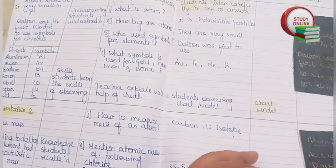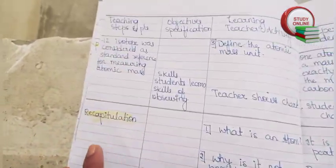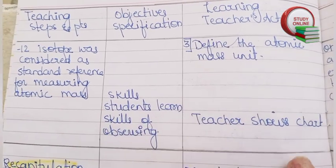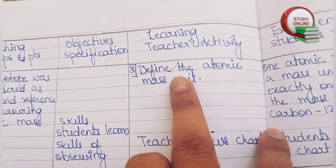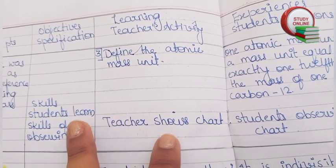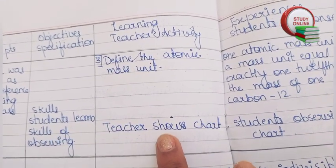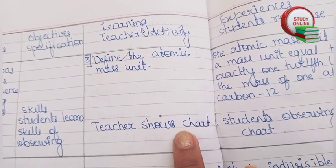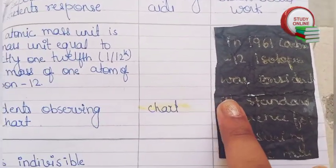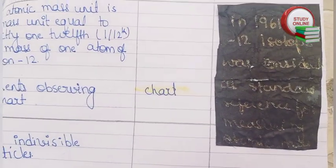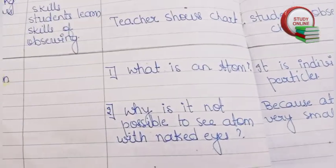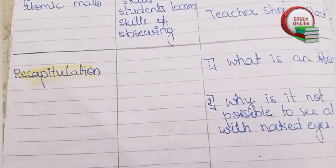Here you can see the rest of Presentation Two. The teacher has to ask students to define the atomic mass unit, and here is the expected answer. Once again the teacher has to show a chart, students observe the chart, and here you can see the corresponding blackboard work.